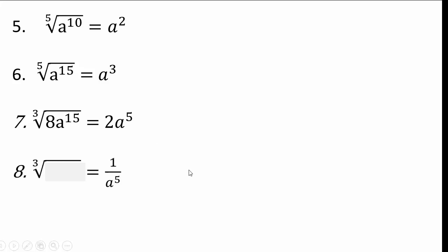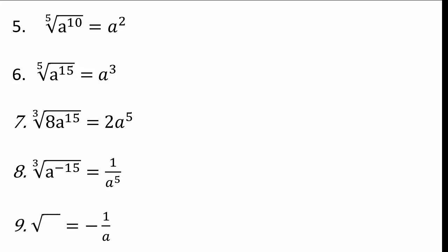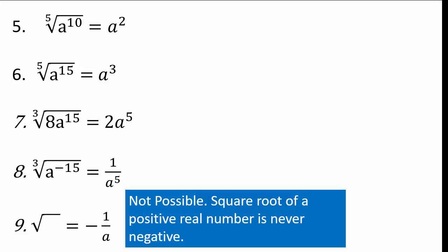On the left side you don't have one over, but on the right side you have one over — meaning a negative exponent. To get a to the negative 5, you need to start with a to the negative 15th: cube root of a to the negative 15th gives a to the negative 5, which is one over a to the 5th.